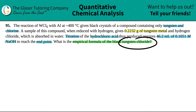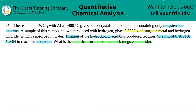They stated that this tungsten chloride came from the reaction of WCl6, and it's a compound containing only tungsten and chlorine. Looking on the periodic table, tungsten is W with atomic number 74, in the D block. We're looking for a compound W_x Cl_y. We don't know how many tungsten or chlorine atoms are in it, so we'll call them X and Y for now.